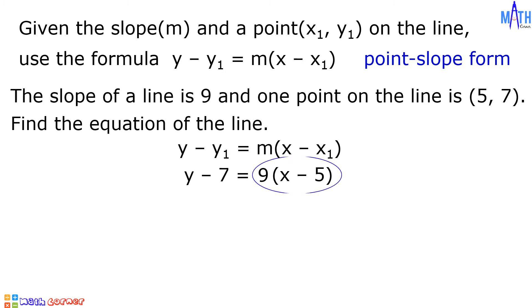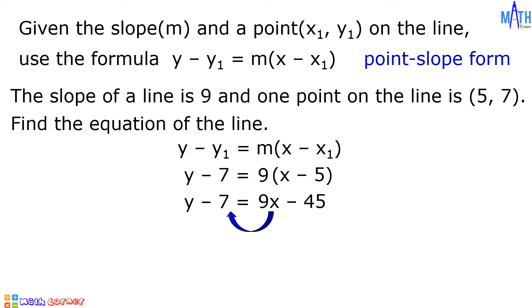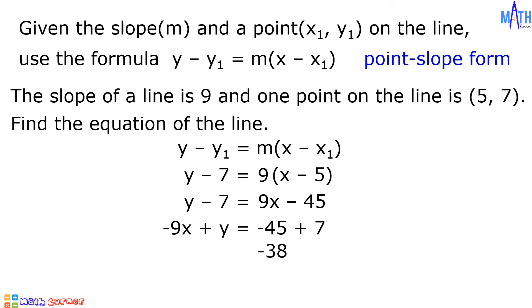Since 9 multiplied by x minus 5 is equal to 9x minus 45, we have y minus 7 equals 9x minus 45. Let us transpose 9x on the other side and negative 7 on the other side. Then we have negative 9x plus y equals negative 45 plus 7. Since negative 45 plus 7 is equal to negative 38, then we have negative 9x plus y equals negative 38.